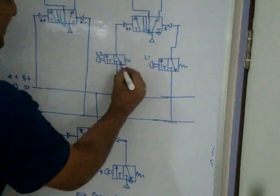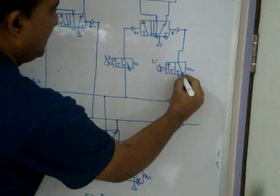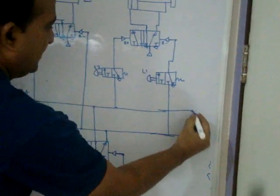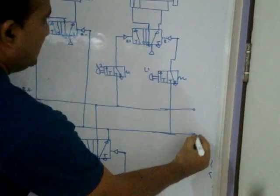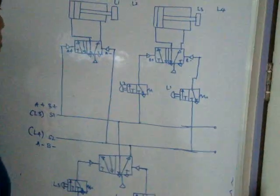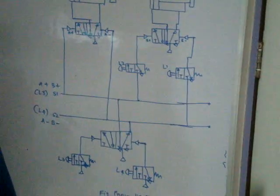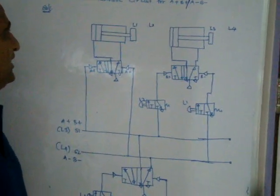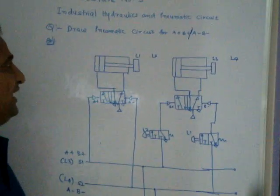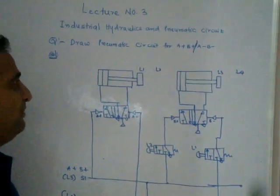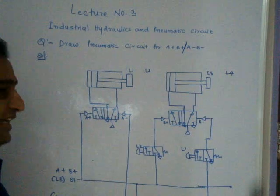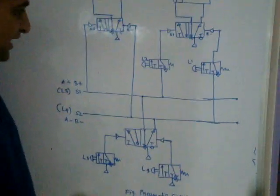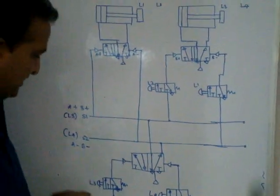Here the muffler is required, and here the muffler is required. So this is how to draw a pneumatic circuit for A+, B+, A-, B-.